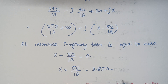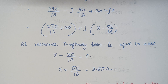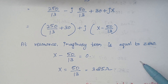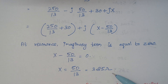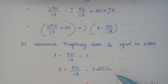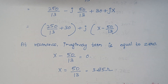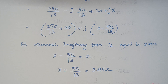For this value of X = 3.85 ohms, the circuit acts as a resonance circuit. Here comes the end of the second problem. Now we will proceed with the third one.